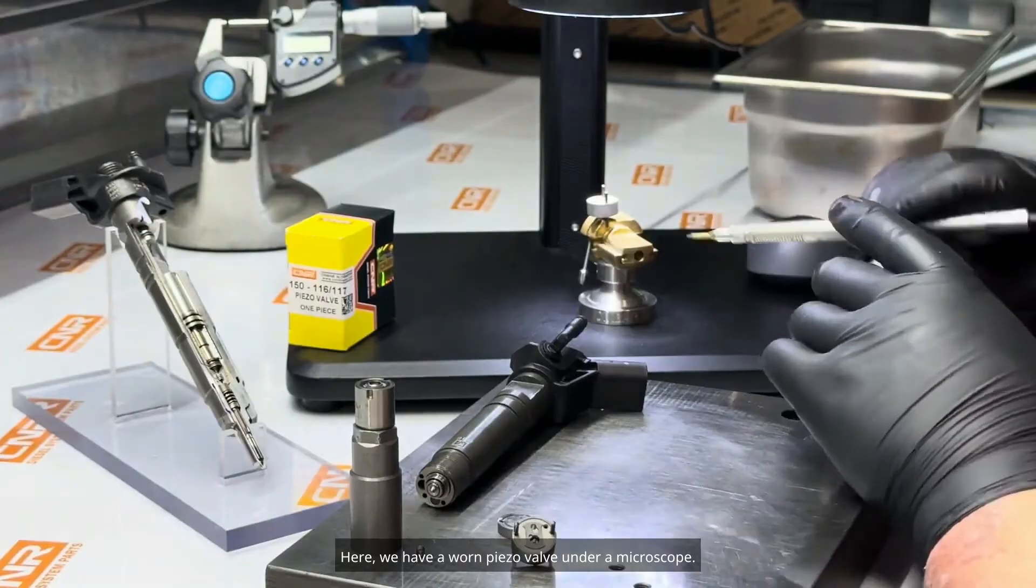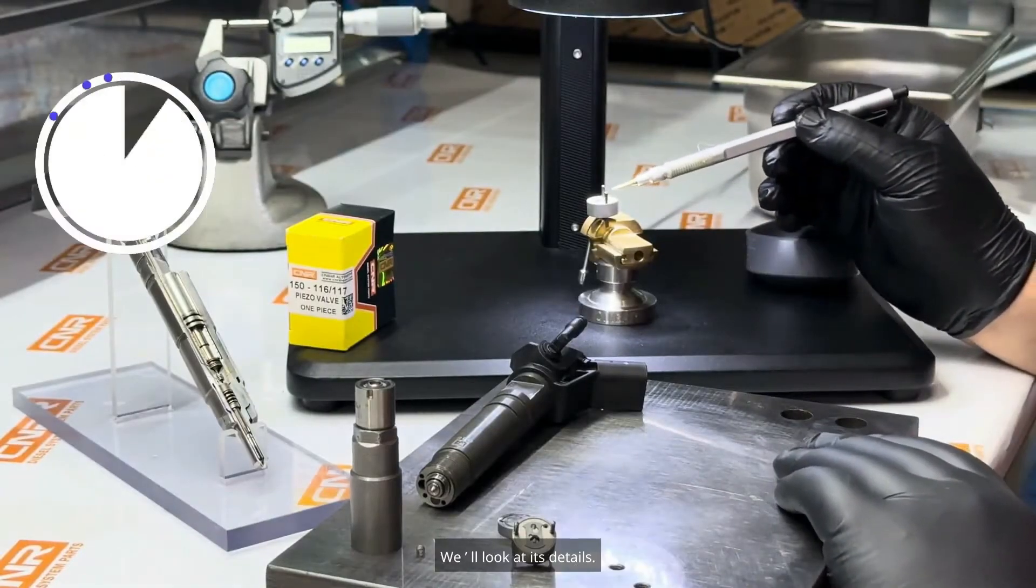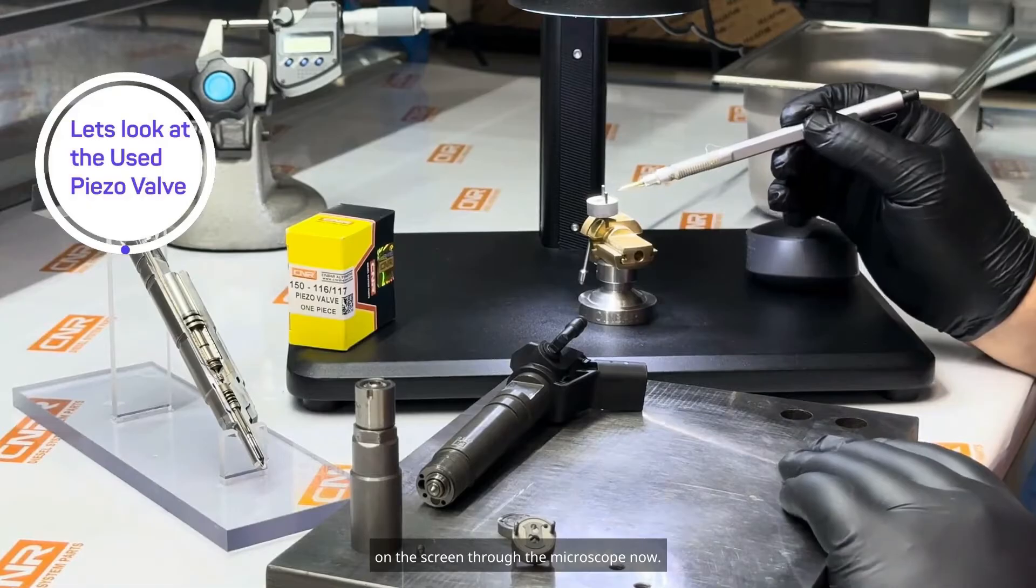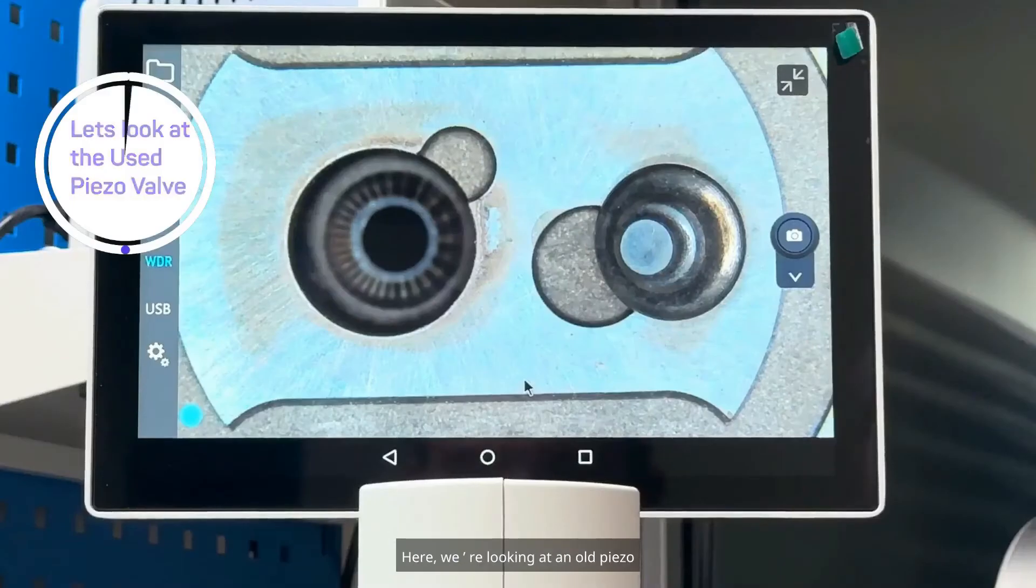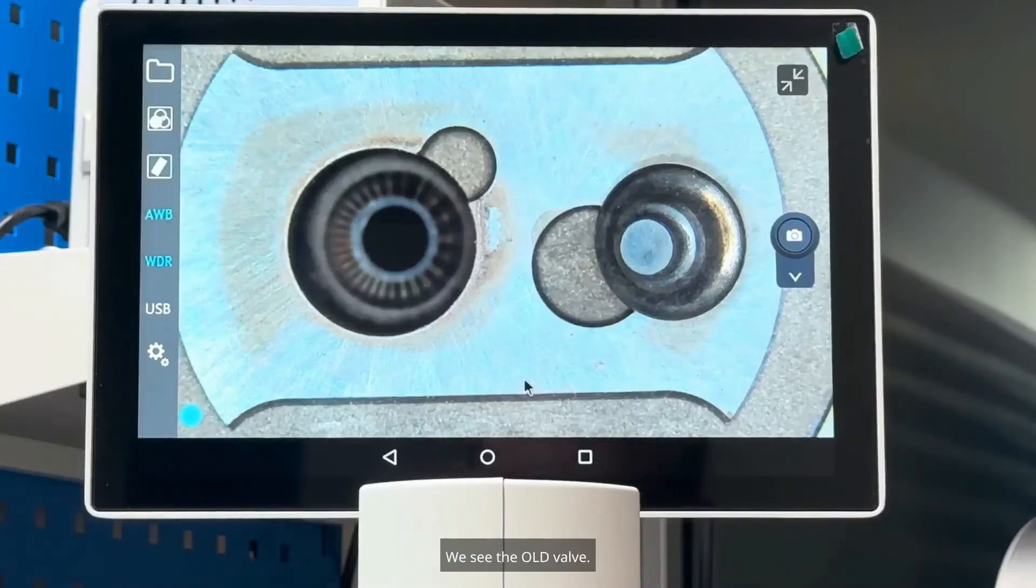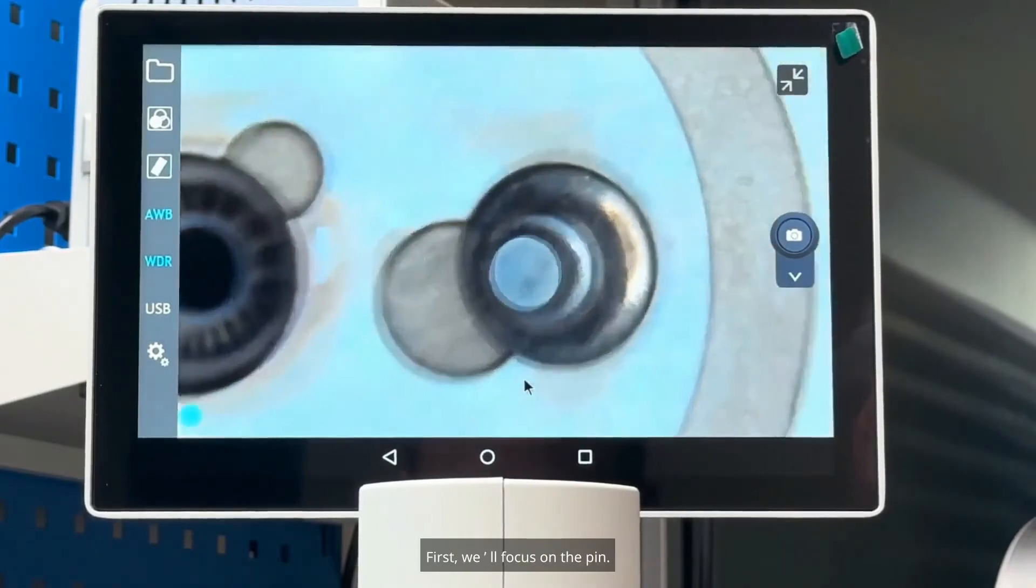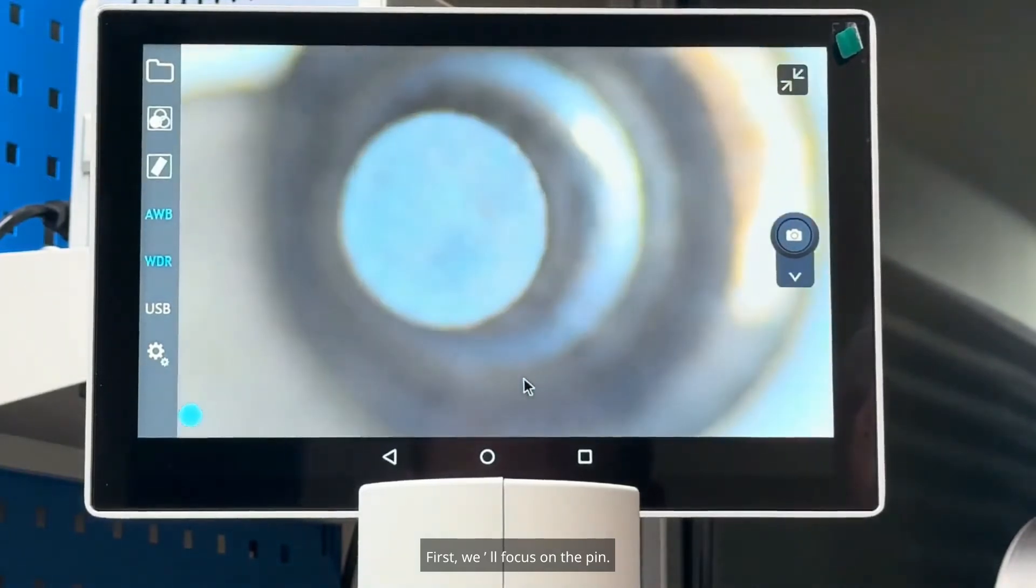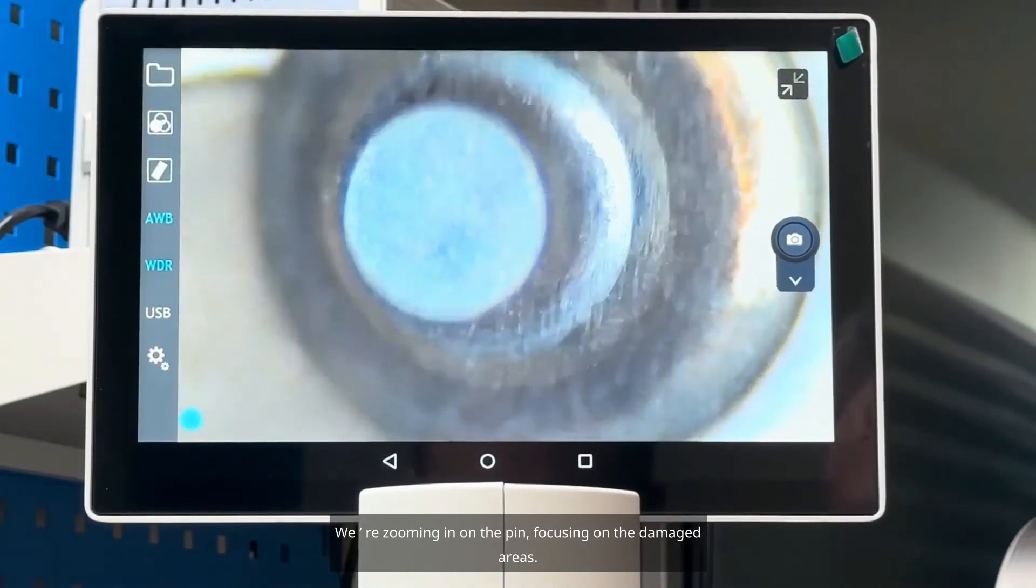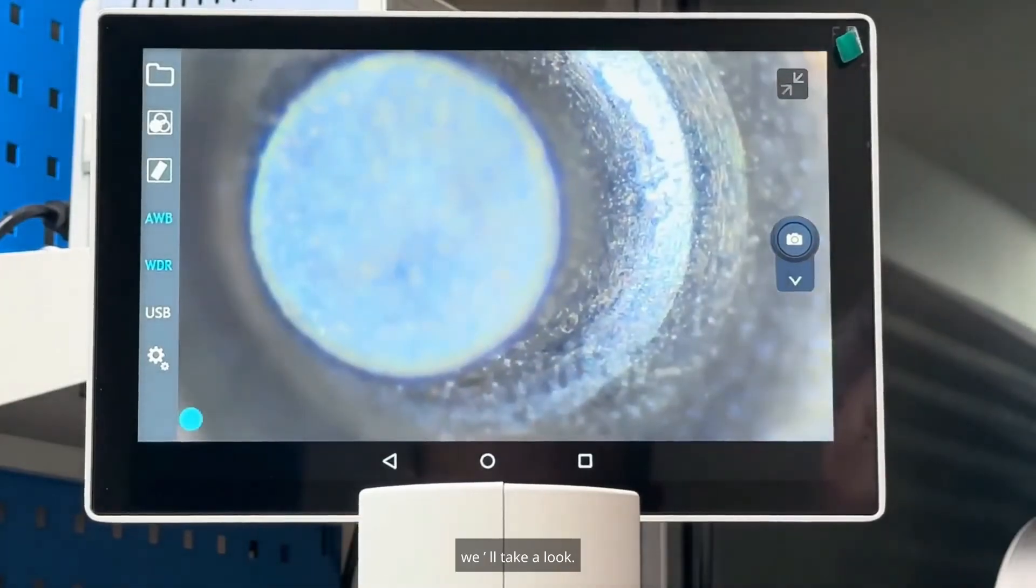Here we have a worn piezo valve under a microscope. We'll look at its details. On the screen through the microscope now, we're looking at an old piezo valve. The wear on the valve seat, how it is all together. First, we'll focus on the pin. We're zooming in on the pin, focusing on the damaged areas.